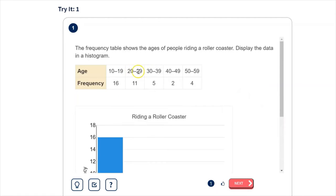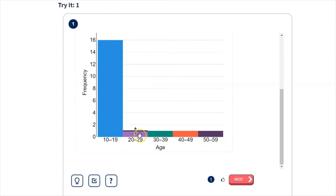30 to 39 was 5. 40 to 49 was 2. And 50 to 59 was 4. And that would be our histogram for the people riding this roller coaster. We can see the roller coaster is much more popular with younger ages than with older ages.